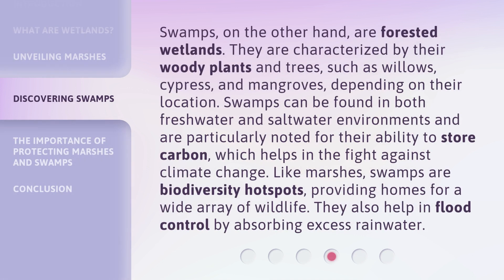Swamps, on the other hand, are forested wetlands. They are characterized by their woody plants and trees, such as willows, cypress, and mangroves, depending on their location. Swamps can be found in both freshwater and saltwater environments and are particularly noted for their ability to store carbon, which helps in the fight against climate change. Like marshes, swamps are biodiversity hotspots, providing homes for a wide array of wildlife. They also help in flood control by absorbing excess rainwater.